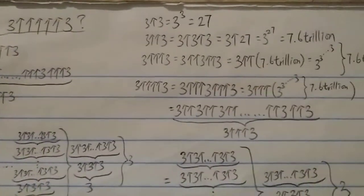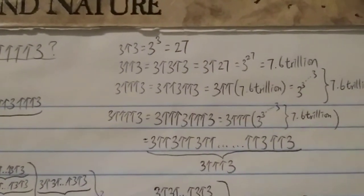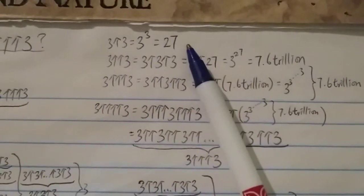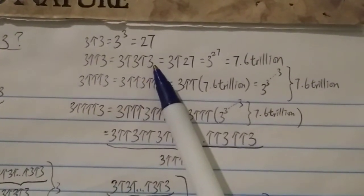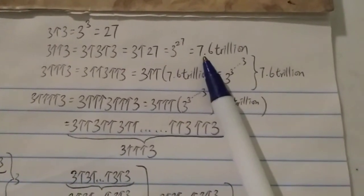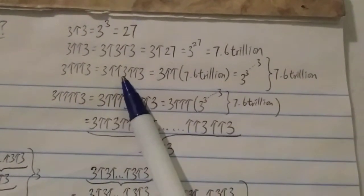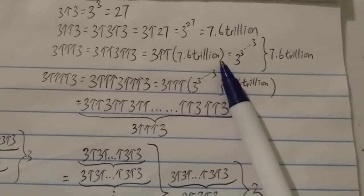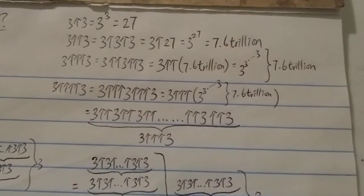Let's start from one arrow all the way to five arrows. Three single-arrow three equals three to the power of three, which is 27 — very simple. Three double-arrow three equals three arrow three arrow three, which is three arrow 27, which is three to the power of 27, around 7.6 trillion. And three triple-arrow three is three double-arrow three double-arrow three, which is three double-arrow of around 7.6 trillion — a power tower of three with 7.6 trillion levels high.